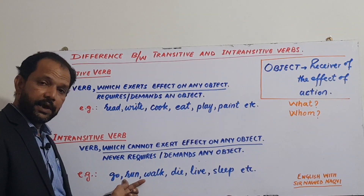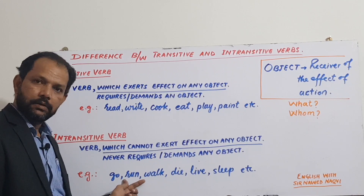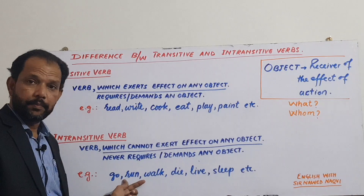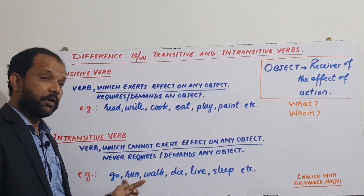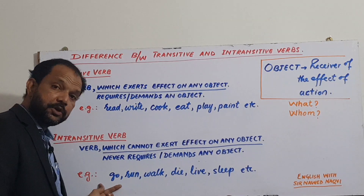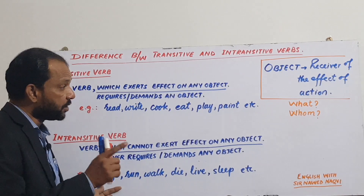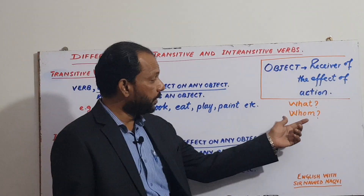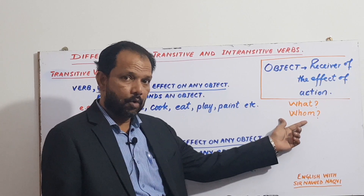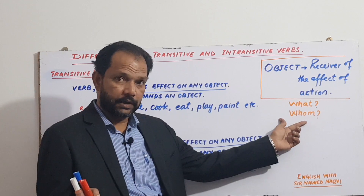Run - they were running what? What का answer possible नहीं है। Whom? का answer भी possible नहीं है। They were running fast - 'fast' how का answer है, यह adverb है। She was going to school - 'to school' where का answer है। Object कभी भी देखिए, या तो what का answer होगा, या whom का। When, where, why, how का answer तो adverb होता है - मेरे एक lecture में आपने देखा होगा।